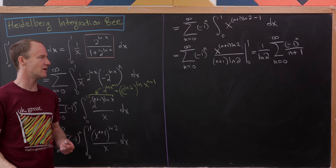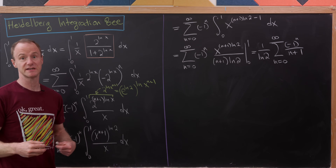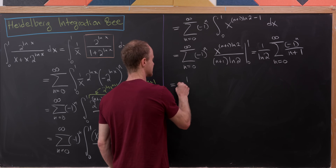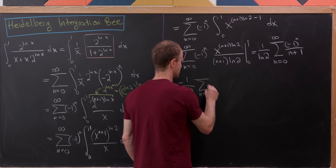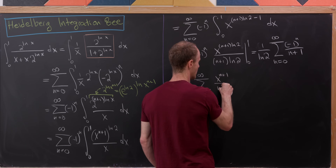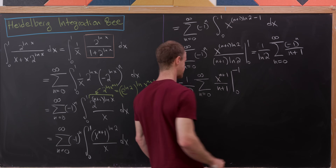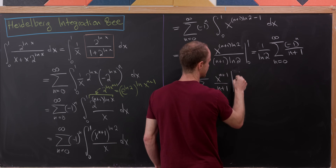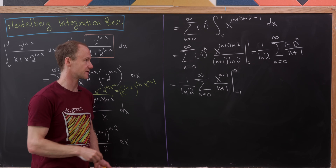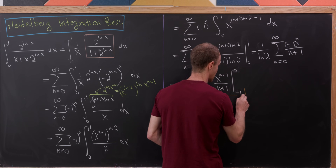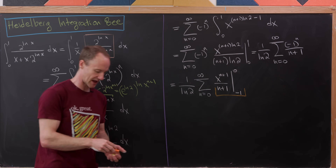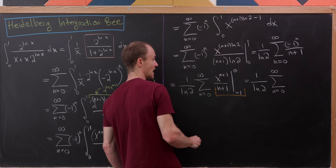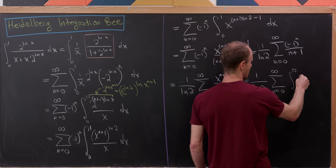That sum is likely familiar, but we'll calculate it for completeness. I'll rewrite it as minus 1 over natural log of 2, times the sum as n goes from 0 to infinity of x to the n plus 1 over n plus 1, evaluated from minus 1 to 0. Applying the fundamental theorem of calculus to rewrite that as an integral, we get 1 over natural log of 2 times the sum as n goes from 0 to infinity of the integral from minus 1 to 0 of x to the n, dx. Bringing the integral outside, we're left with a geometric series we can sum again.